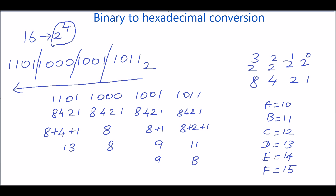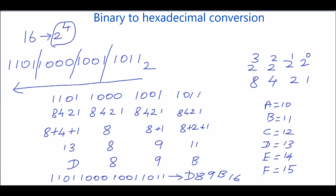The group results are: 9, 8, and 13 which is D. So the given binary number 1101100010011011 can be written as D89B in base 16.